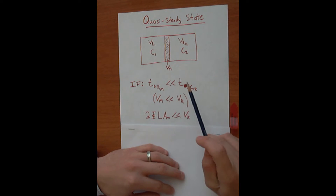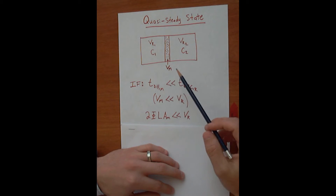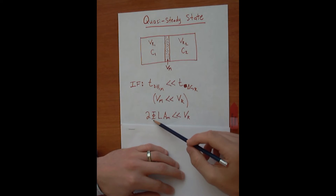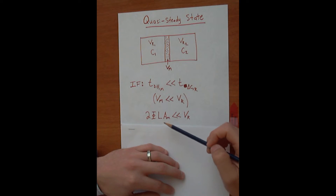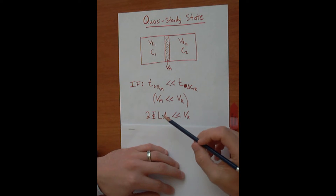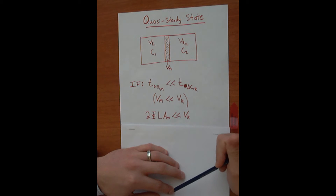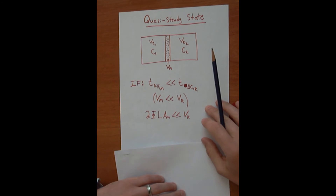Another way to recognize quasi-steady state is this equation derived in class: two times the partition coefficient of the membrane, times the length of the membrane, times the area of the membrane. If this term is much less than the volume of the reservoir, then you can also assume it's a quasi-steady state situation.